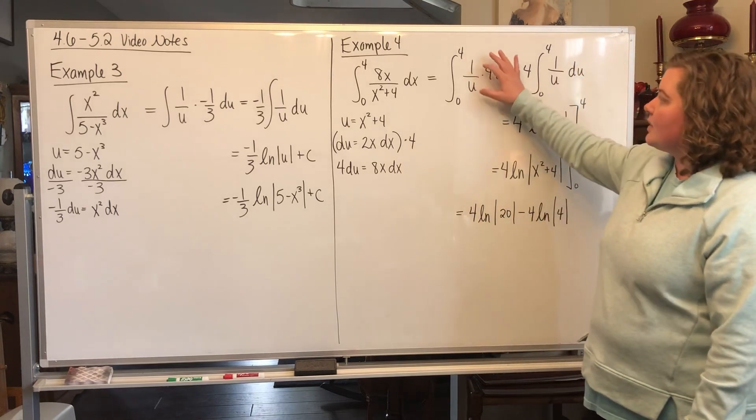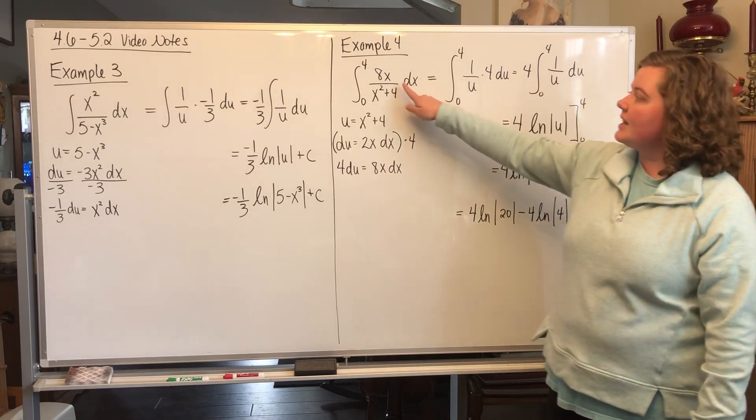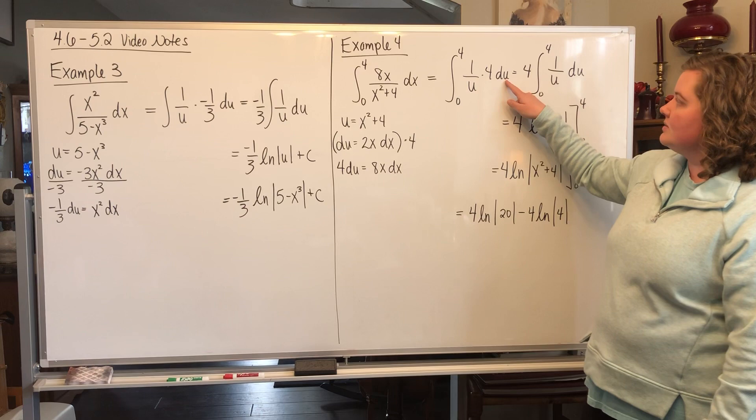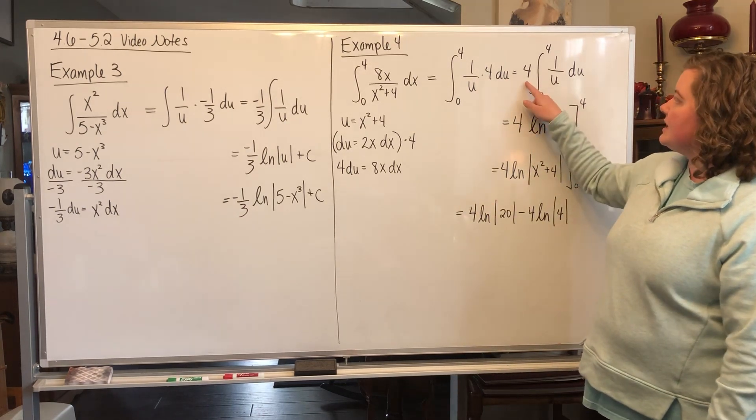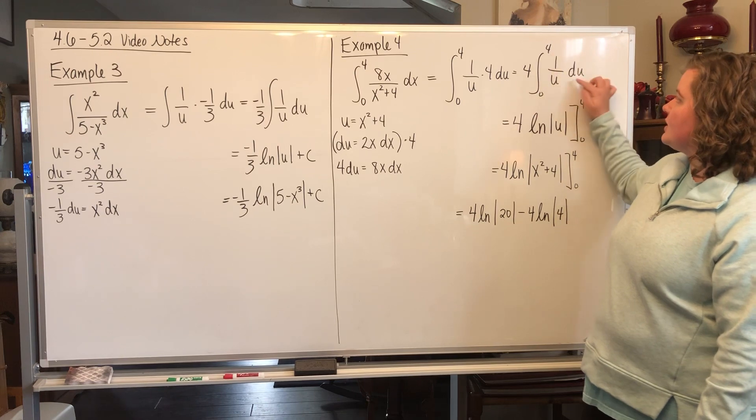We go from 0 to 4: 1 over u, and then the 8x dx becomes 4du. Remember, you can move the 4 to the outside of your integral. So 4 moves out here. You're going from 0 to 4 of 1 over u du.